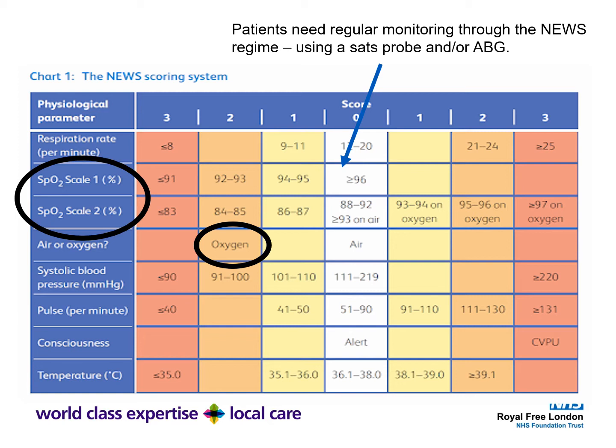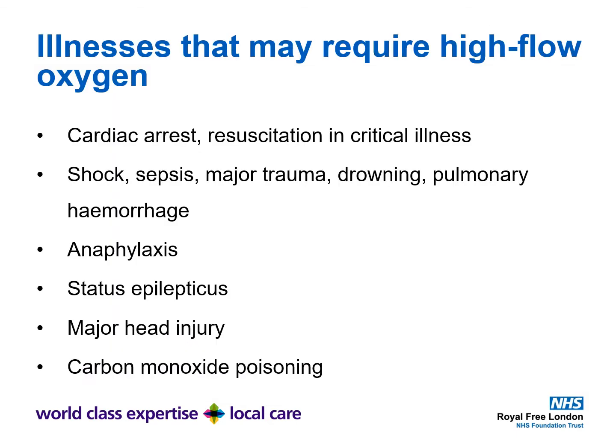Patients need regular monitoring through the NEWS regime using a SATs probe. To get a good reading, you need reasonable blood flow and reasonable oxygenation levels. Saturations are only truly useful in unwell patients — if the patient is unwell, consider doing an arterial blood gas. Remember that having oxygen on will give two points on the NEWS score.